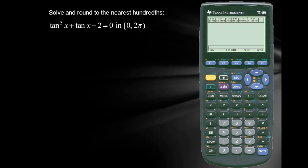Solve and round to the nearest hundredths the function tangent squared x plus tangent x minus 2 equals 0 in the interval from 0 to 2 pi.